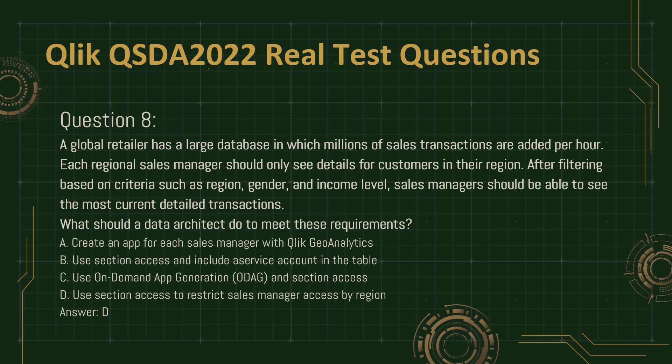A. Create an app for each sales manager with Qlik Geo Analytics. B. Use section access and include a service account in the table. C. Use on-demand app generation (ODAG) and section access. D. Use section access to restrict sales manager access by region. Answer: D.